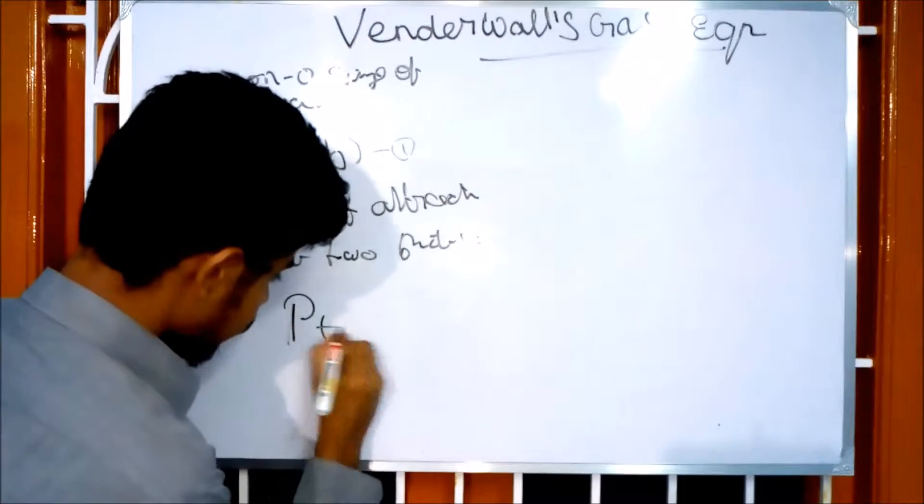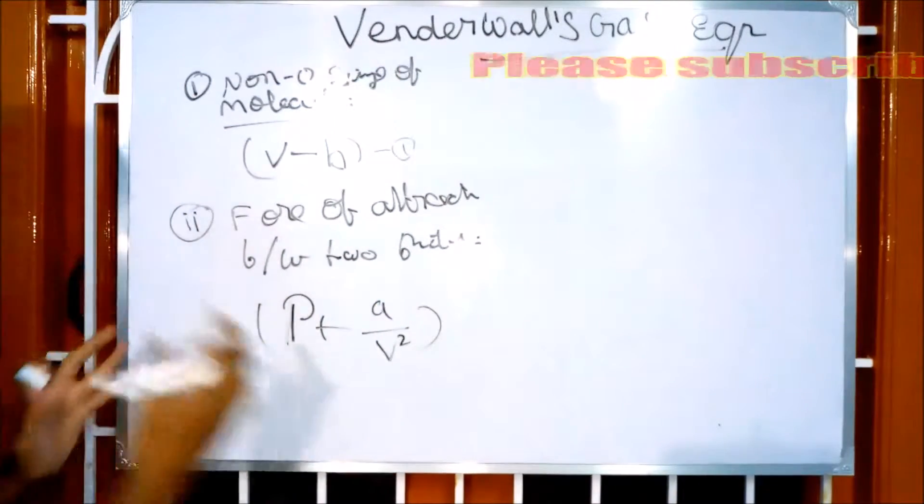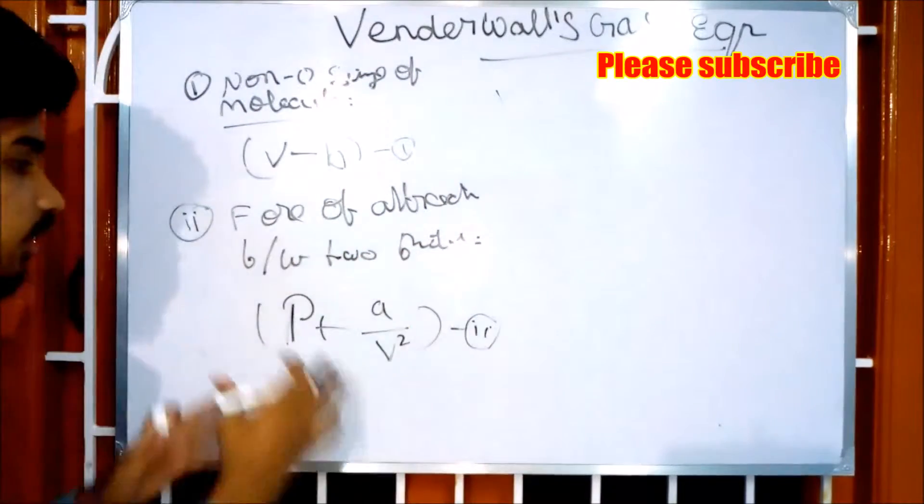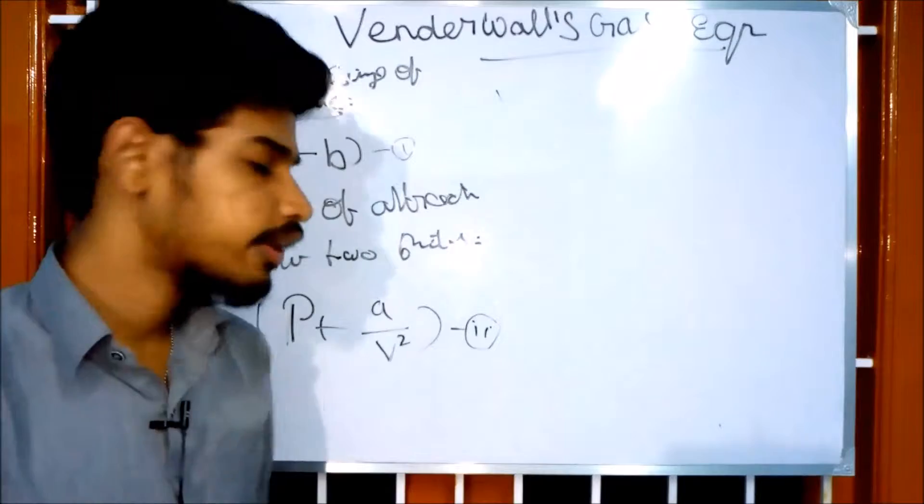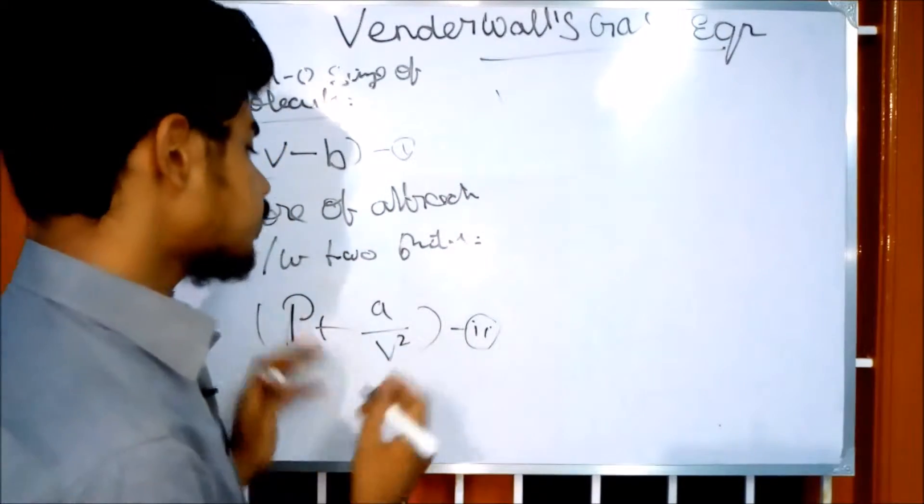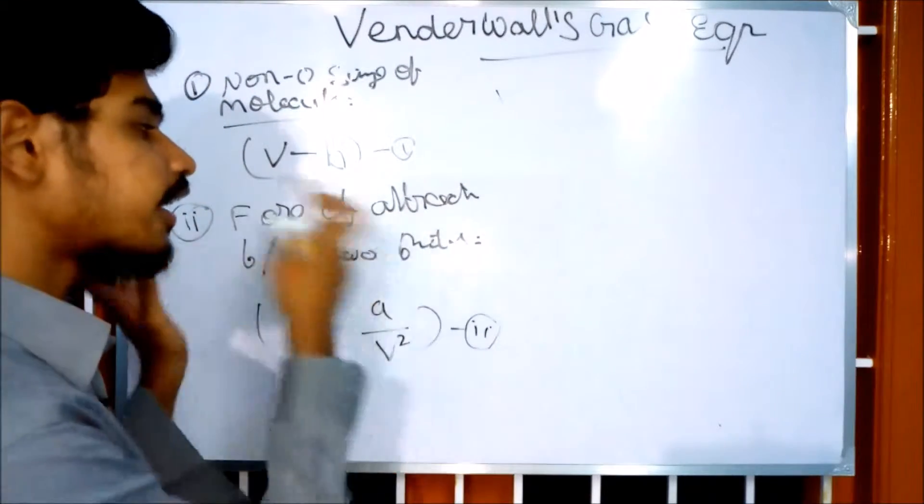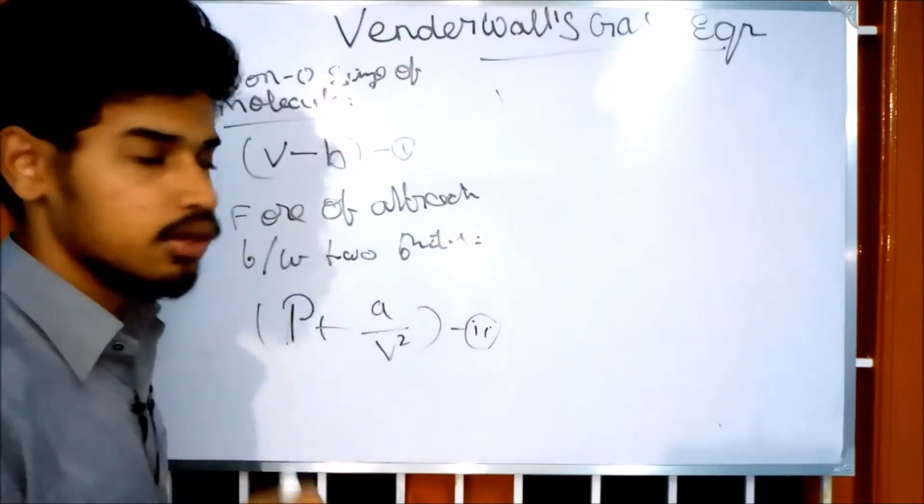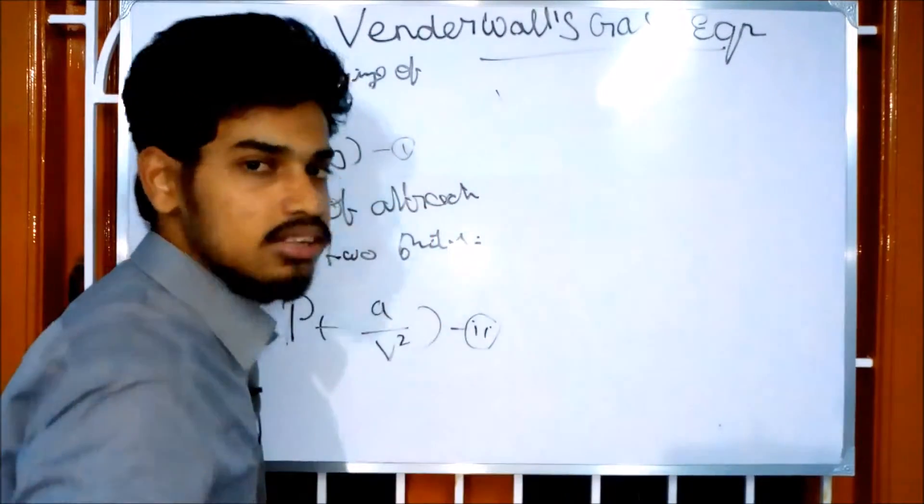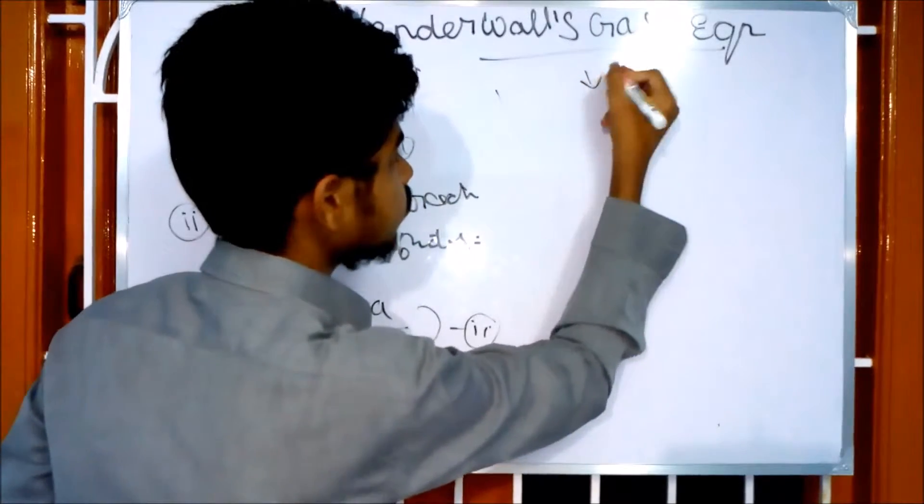You can see the corrections with constants a and b. We add these two corrections to the ideal gas equation. If you check the previous video, we'll substitute these into the ideal gas equation to get the Van der Waals equation.